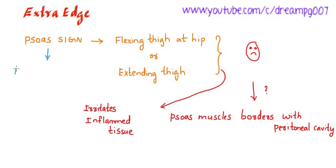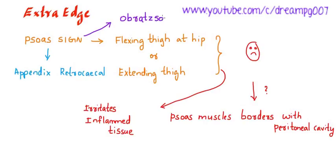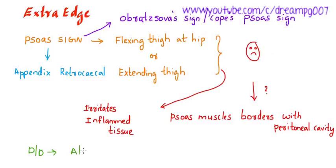If the psoas sign is positive, it means that the appendix is in a retrocecal position. Another name for the psoas sign is the right psoas sign or Cope's sign. Differential diagnosis for this psoas sign includes acute appendicitis and psoas abscess.